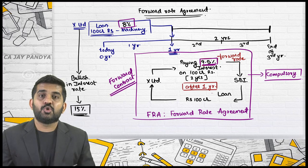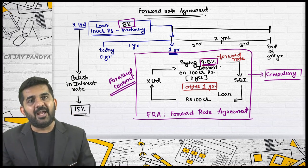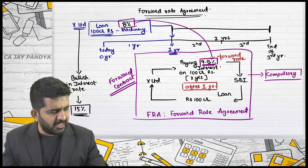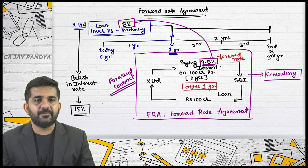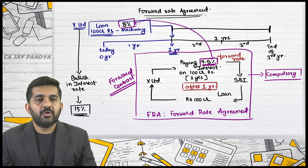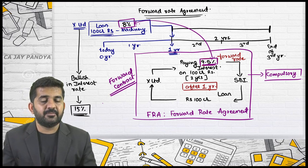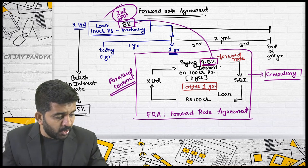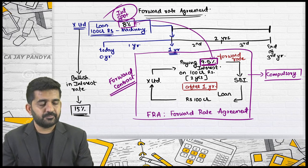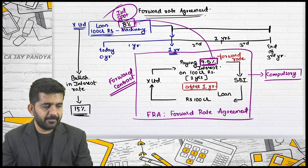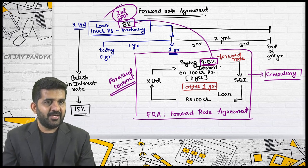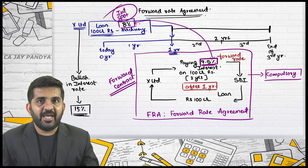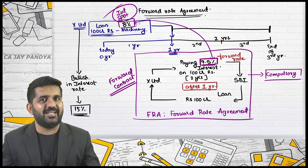You were bullish in interest rate, so you already purchased a loan at 9.5%. These two rates cannot be compared. 8% is a spot interest rate. 9.5% is a forward rate — specifically, the forward rate for the second year, fixed right now as 9.5%. More specifically, this is the rate whereby you will be getting 100 crore rupees loan after one year, and this rate will be applicable for the second year as well as the third year.